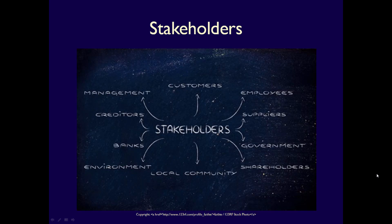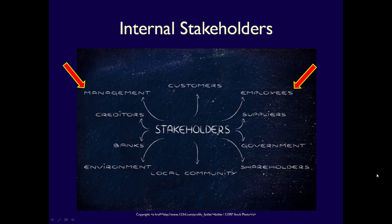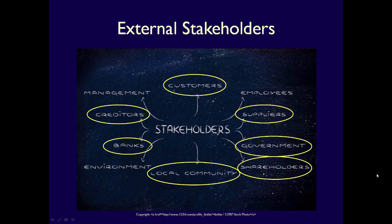Stakeholders are individuals or groups who either affect the business or are affected by the actions of the business. Every stakeholder has an objective, something they want from their relationship with the business. Stakeholders can be either internal or external. Internal stakeholders work for the business, and their objectives generally relate to their ability to do their jobs, keep their jobs, get promoted, and get paid. External stakeholders are outside of the business, and their objectives relate to the decisions they'll make about providing resources — generally money — to the business. This is called resource allocation decisions.